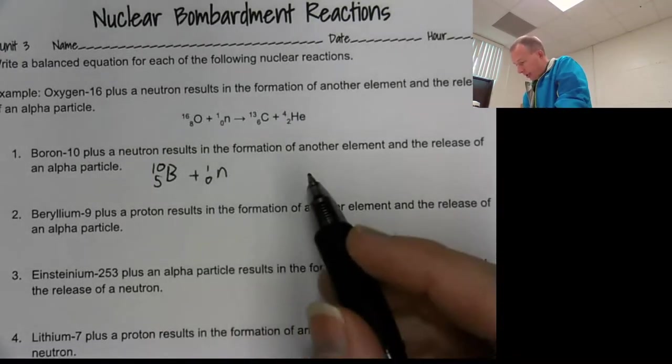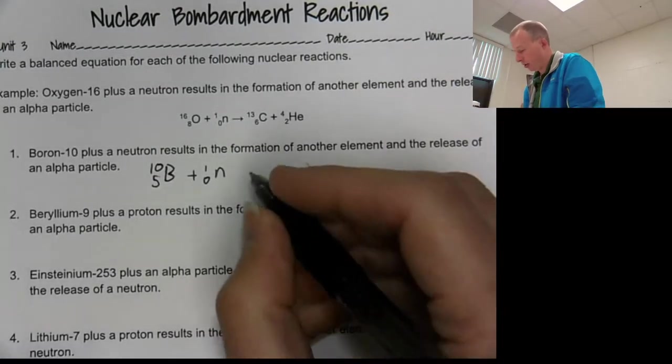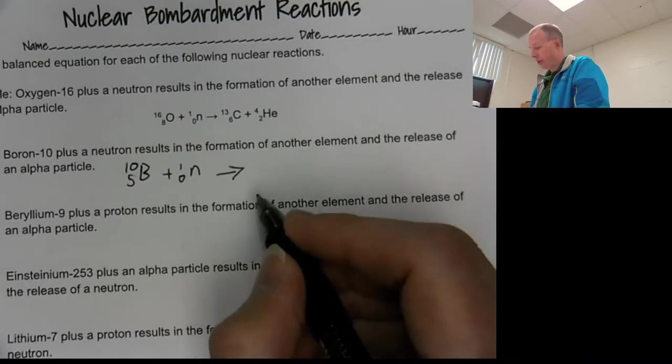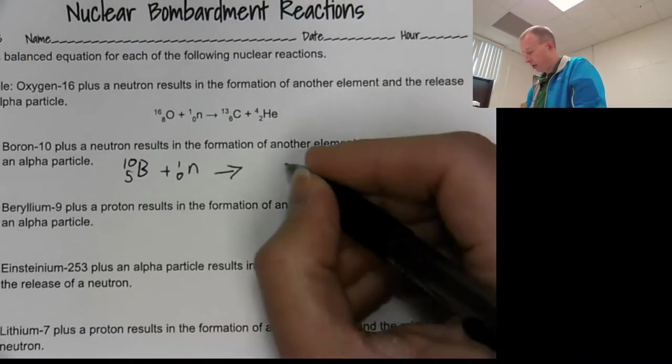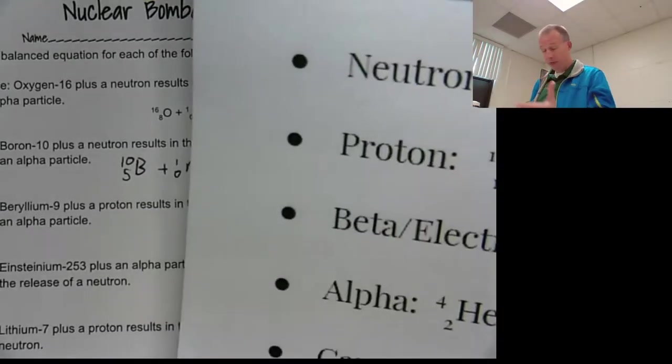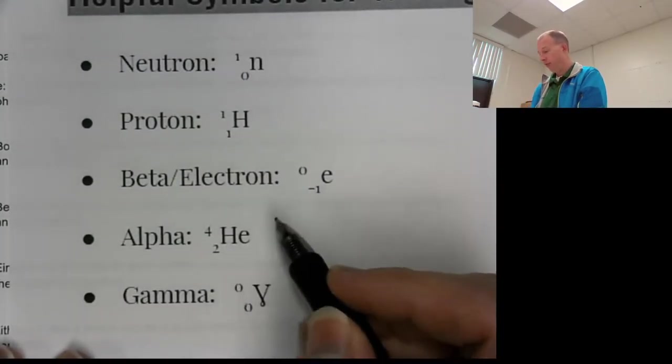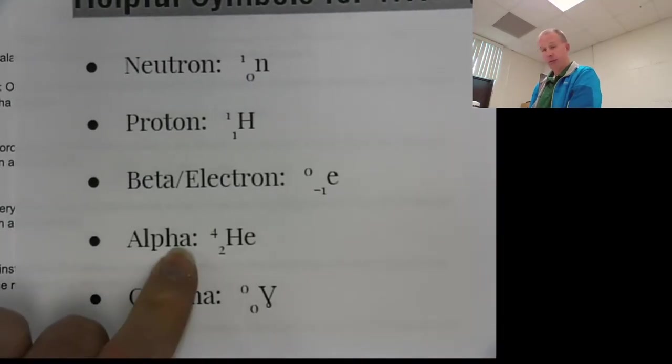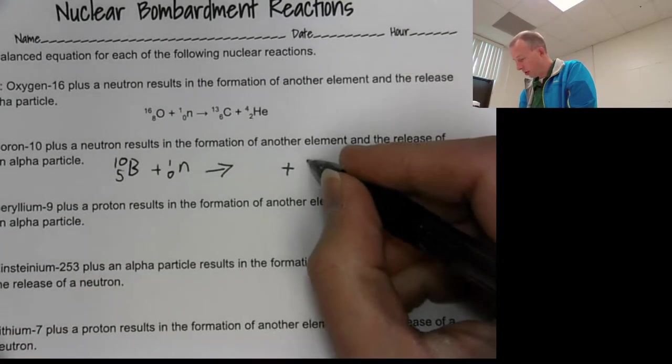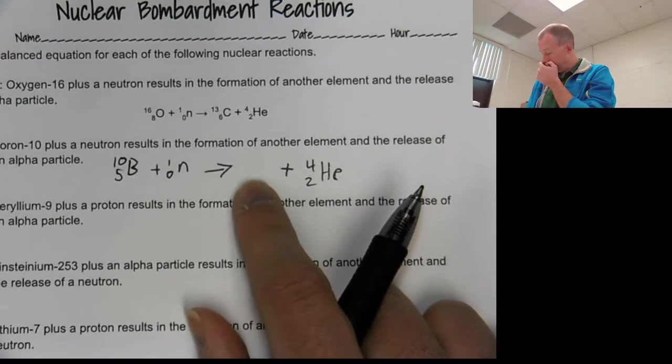So it says it results in the formation of another element and the release of an alpha particle. So the one thing we know then, we're going to write some other element here and we know that it forms or results in the release of an alpha particle. Now, what is an alpha particle? Hopefully you know by now that it is a helium atom, which is just a 4 over 2 and He. But if you don't, it's right here. So plus 4, 2, He.